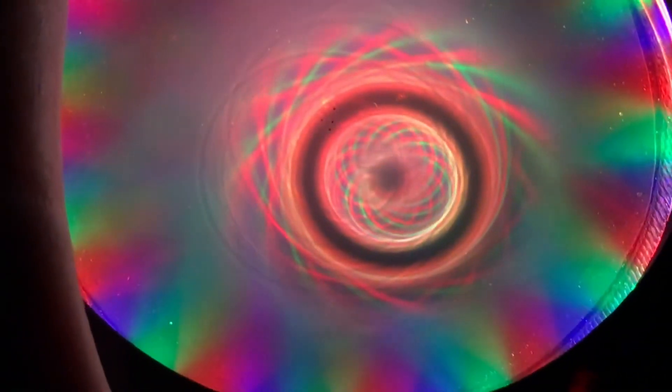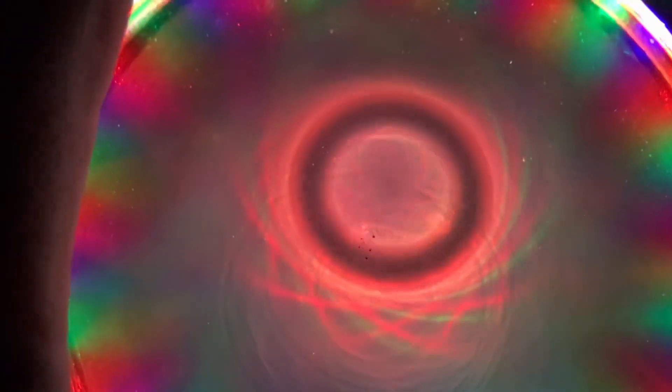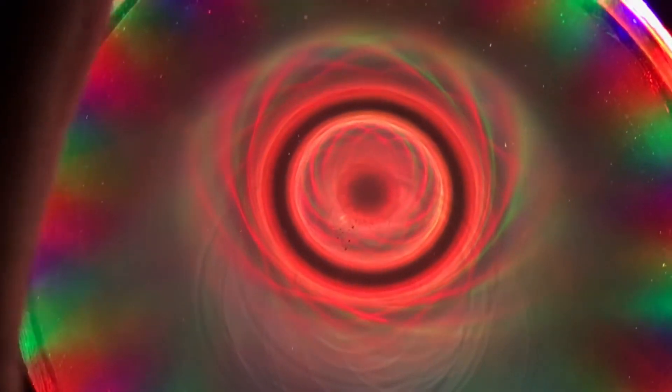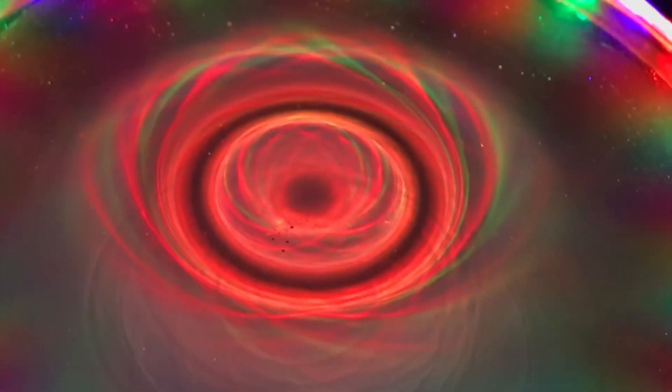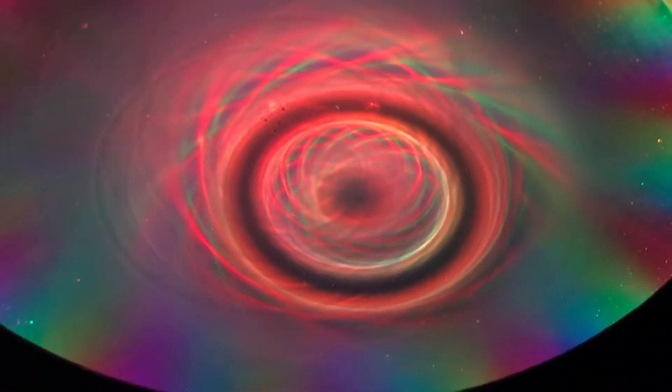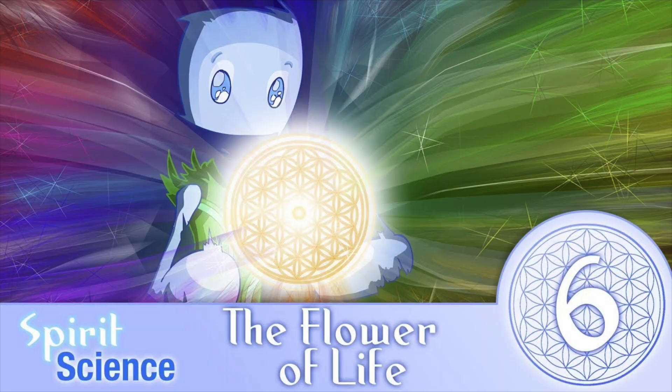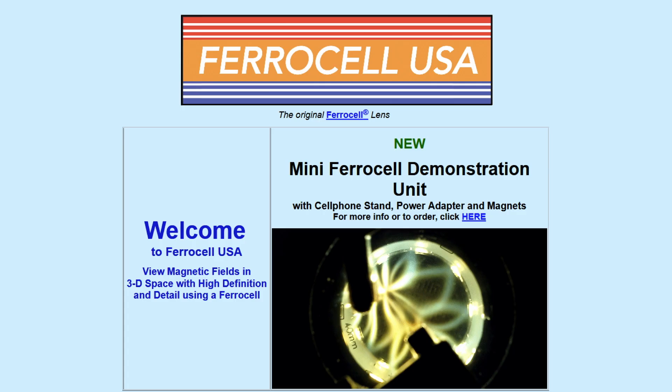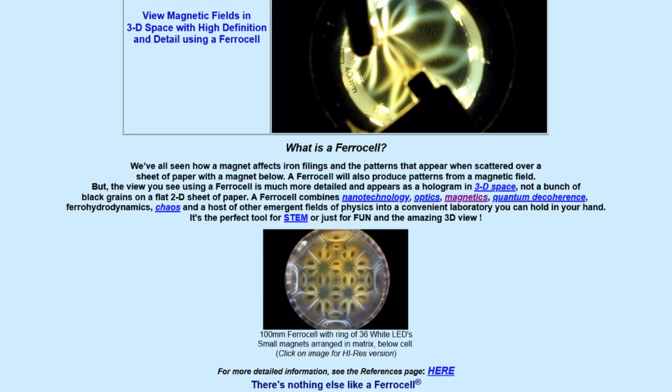When you place a magnet on the ferrocell and turn the LEDs on, you get cool patterns. And there's nothing that the woo community loves more than pretty patterns and geometries, as if they have magic properties. Tim Vanderelli and many other people in the magnetic woo community will tell you that these patterns show magnetic field lines.